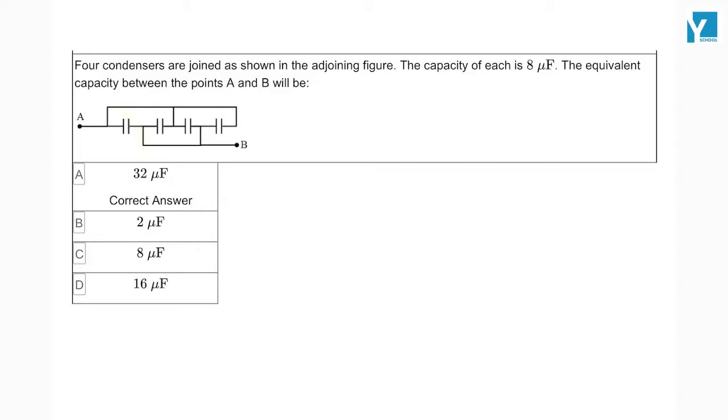Four condensers are joined as shown in the adjoining figure. The capacity of each is 8 microfarads. The equivalent capacity between the points A and B will be: